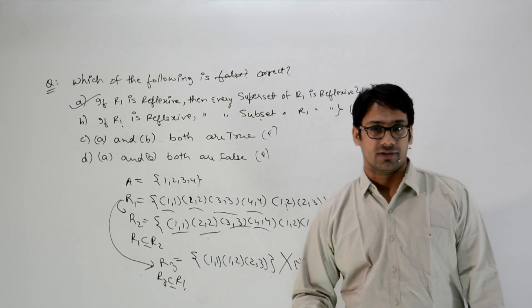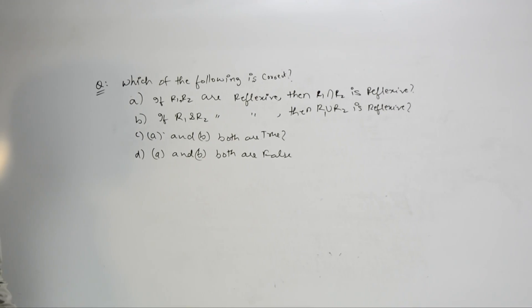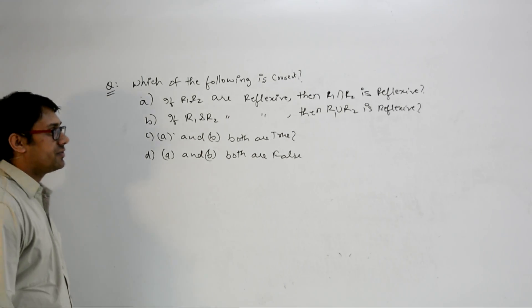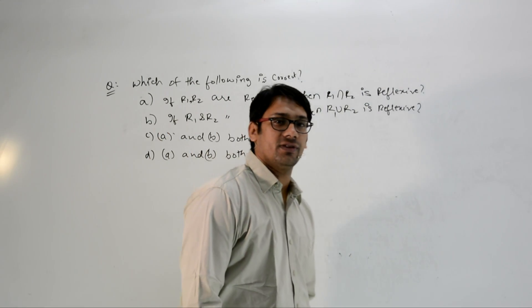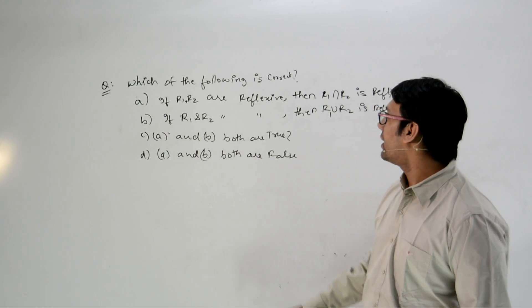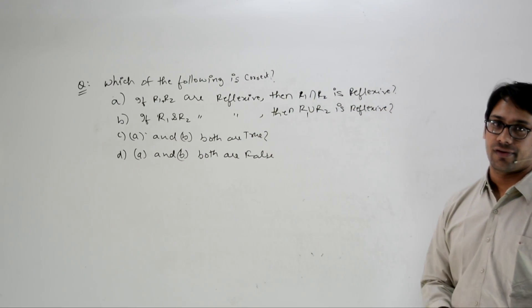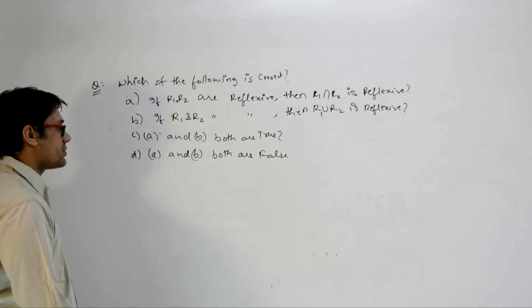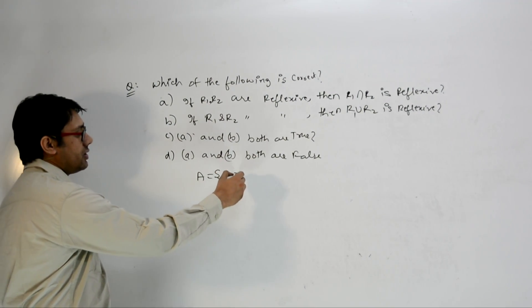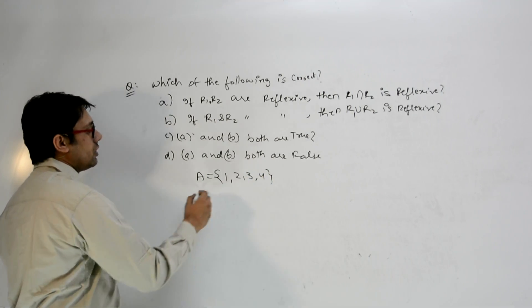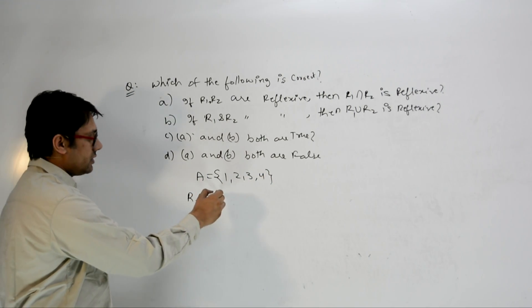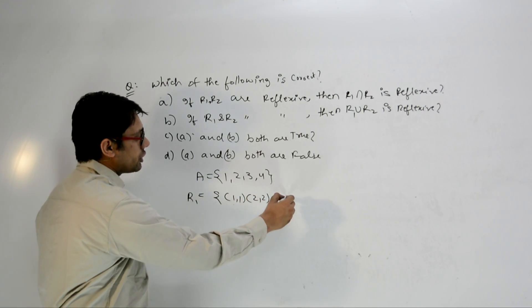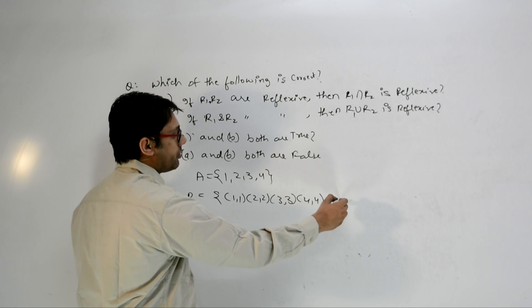Let me take one more example. If R1 and R2 are reflexive, then: is R1 intersection R2 reflexive? Is R1 union R2 reflexive? Assume set A = {1,2,3,4}. On set A we have relation R1 = {(1,1),(2,2),(3,3),(4,4),(1,2)} and R2 is also defined as a reflexive relation.